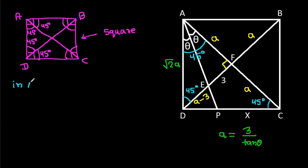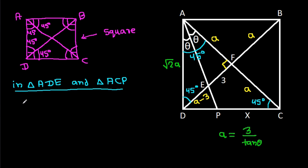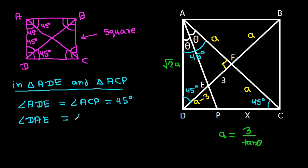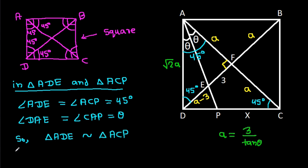In triangle ADE and triangle ACP, angle ADE equals angle ACP, which is 45 degrees, and angle DAE equals angle CAP, which is theta. So triangle ADE is similar to triangle ACP. Hence AD over AC equals DE over CP.